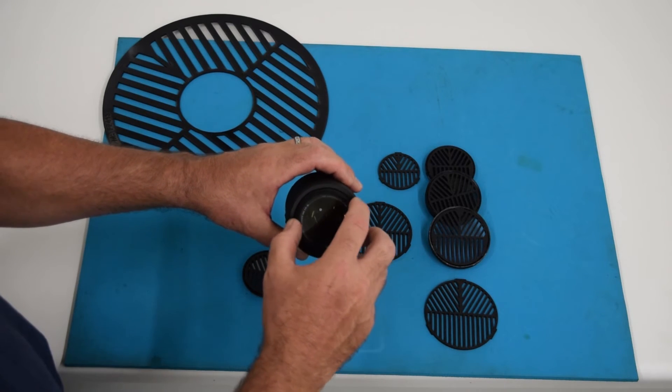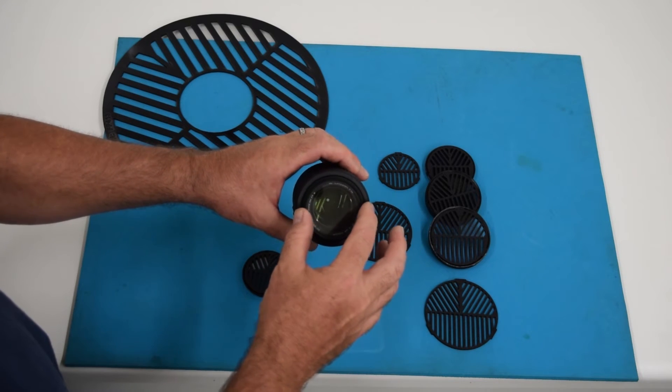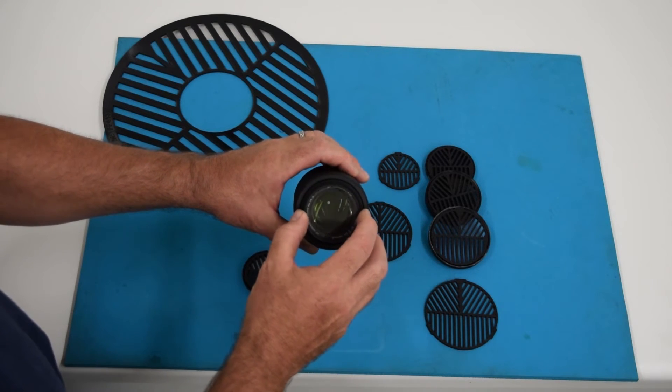So put on a UV filter, screw it down, just barely snug. Don't tighten these down, just barely snug.